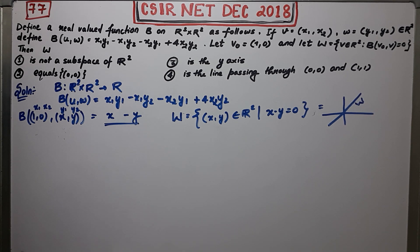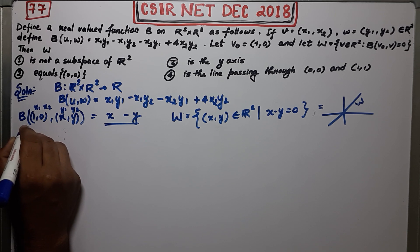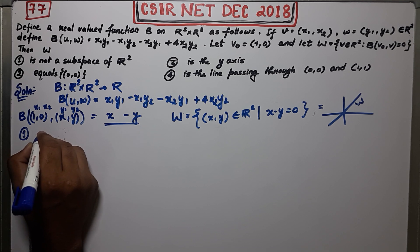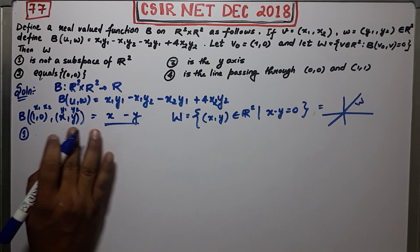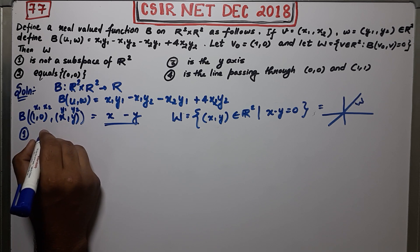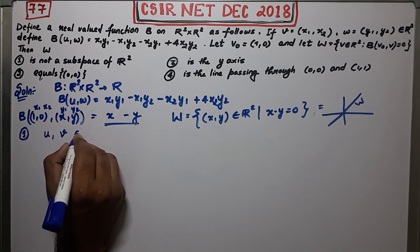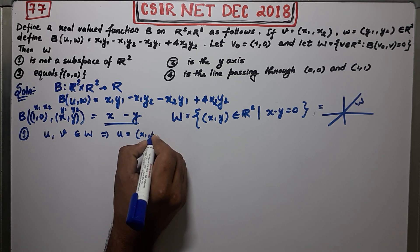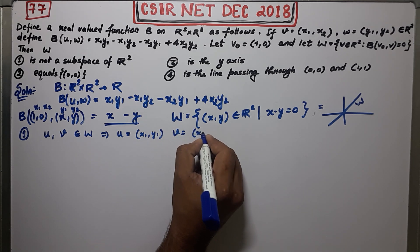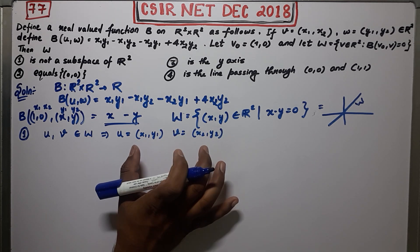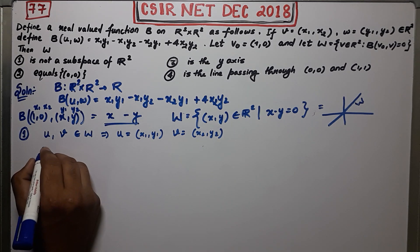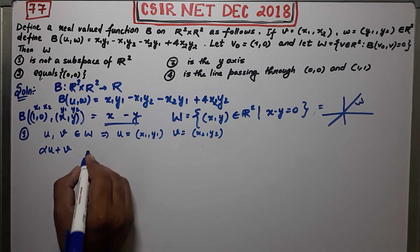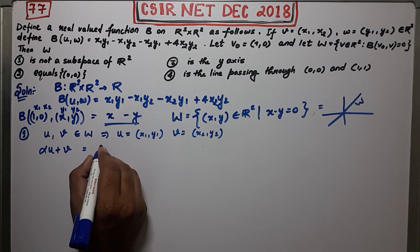Option one says W is not a subspace of R². We need to check whether W is a subspace or not. Take two points u and v belonging to W, so u = (x₁, y₁) and v = (x₂, y₂), both satisfying the condition. Now we calculate αu + v, where α is an element from the field.